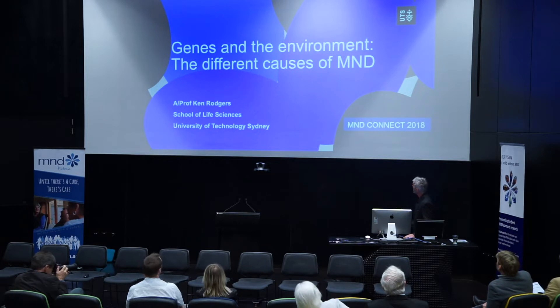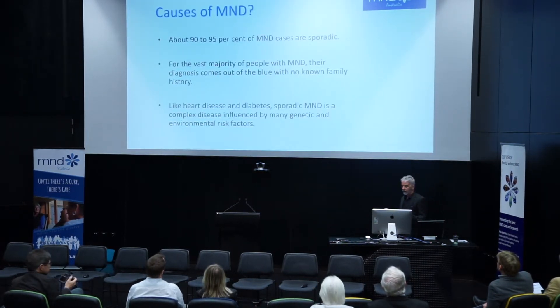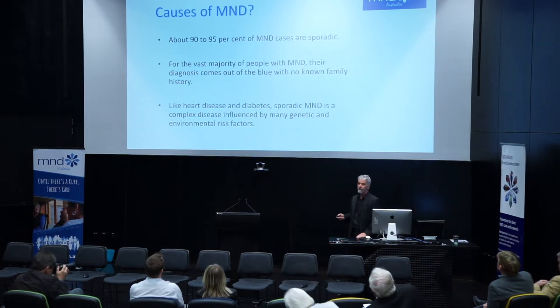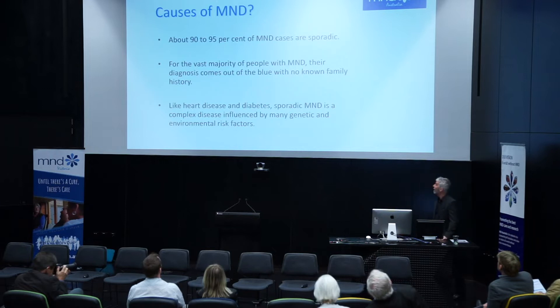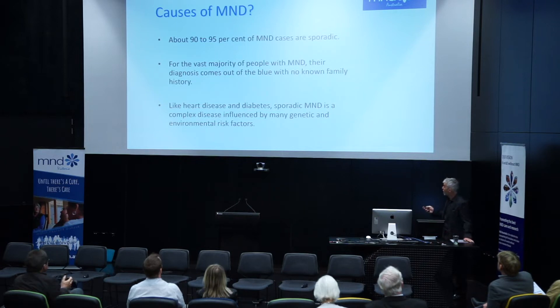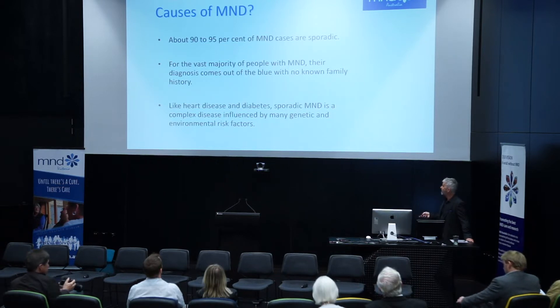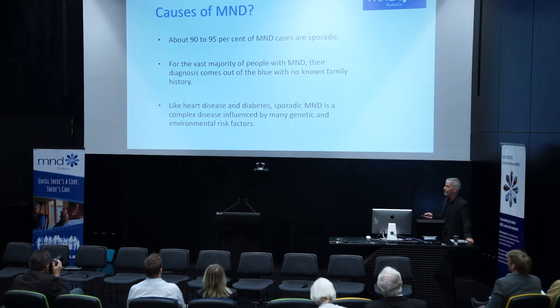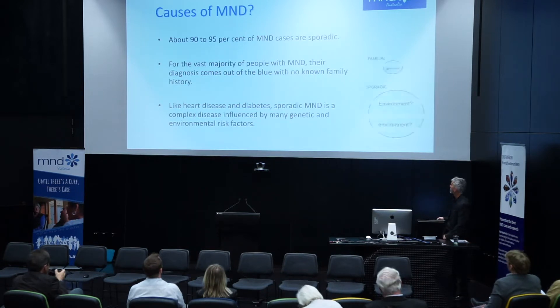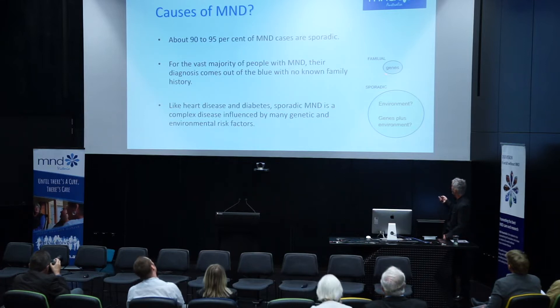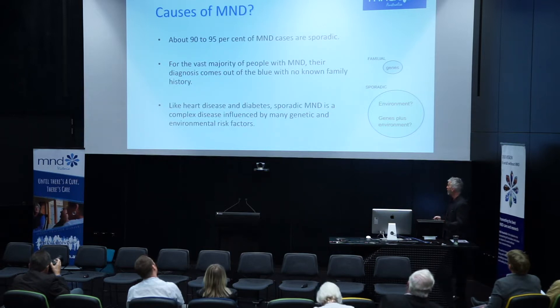There have been some interesting things that happened in our understanding of motor neurone disease over the past few years. Genes and environment are the different causes of motor neurone disease. A good place to start is the MND Australia website, which says about 90 to 95% of MND cases are sporadic. So for most people with MND, their diagnosis comes out of the blue — no family history. Like heart disease and diabetes, it's a complex disease influenced by many genetic and environmental risk factors, with about 10% having a family history and 90% being complex.